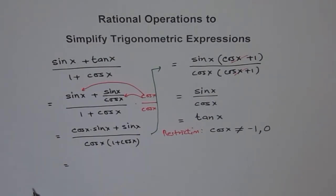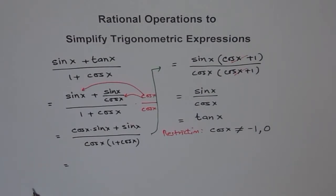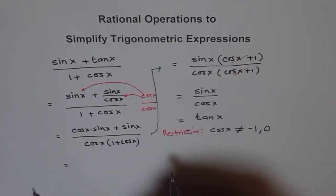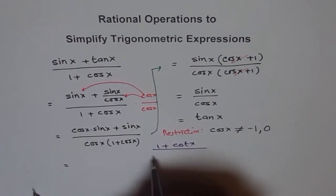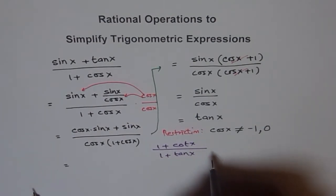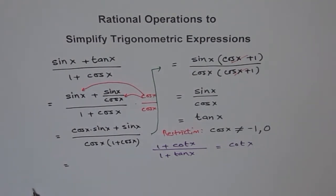Like this, you can solve a couple of questions. I can give you some to practice. For example, you can do this similar one: 1 plus cot x over 1 plus tan x. When you solve this, you should get that this equals cot x. Also write down your restrictions for this problem. That will help you. We'll give you more examples like this. Thank you.